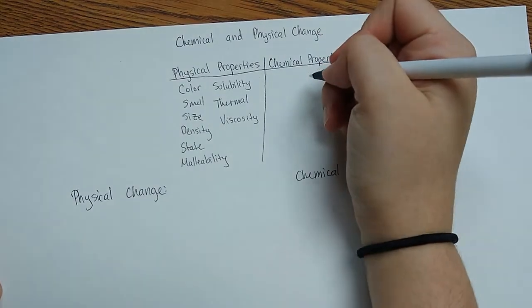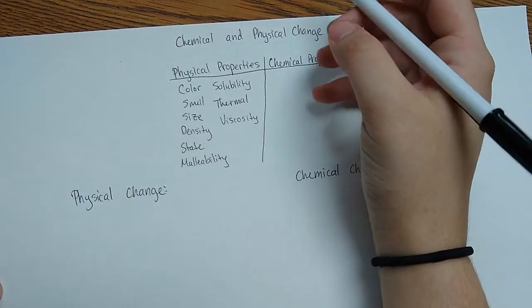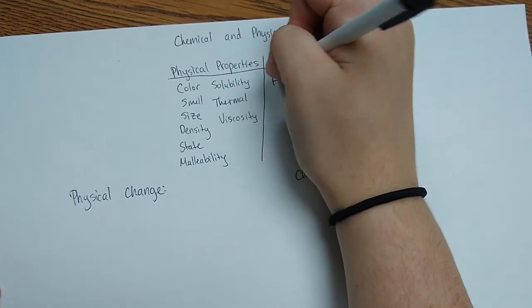Now chemical properties describe a substance's ability to change into a new and different substance. So some examples, flammability.